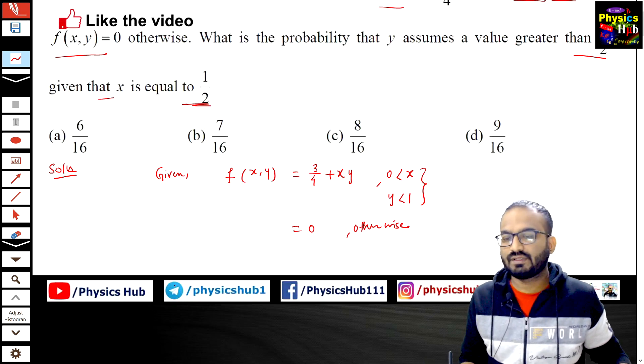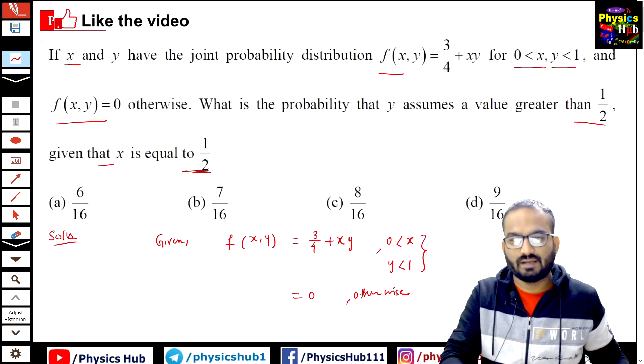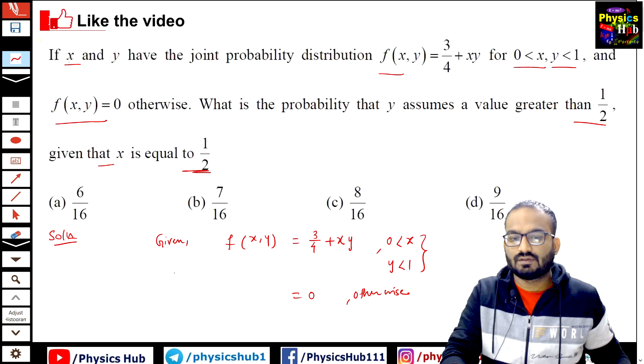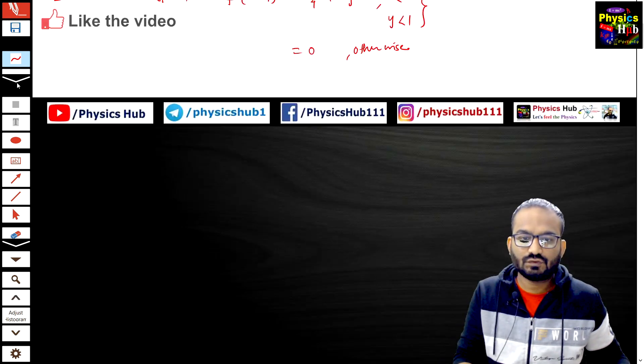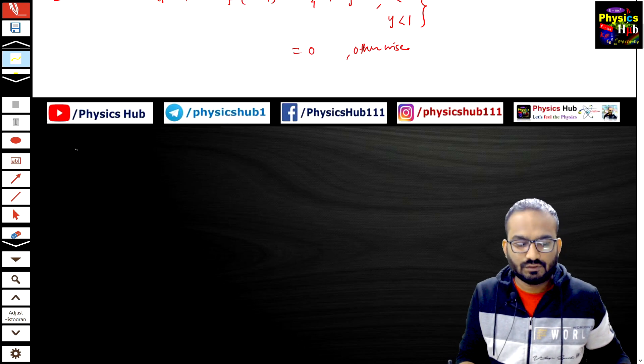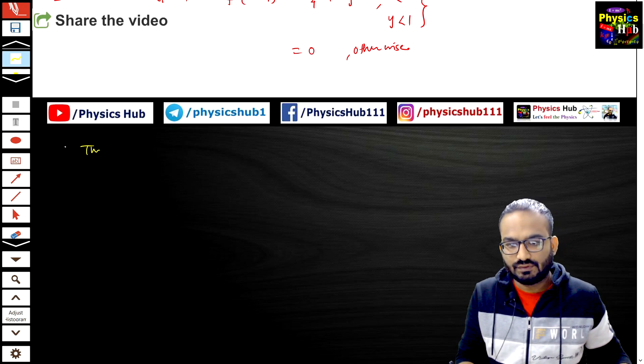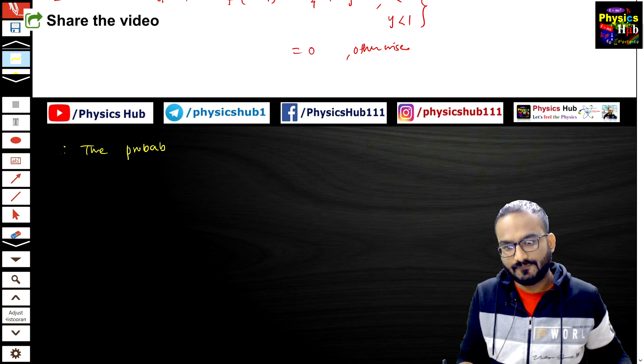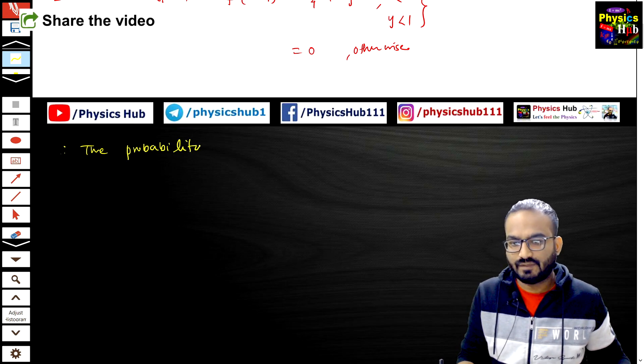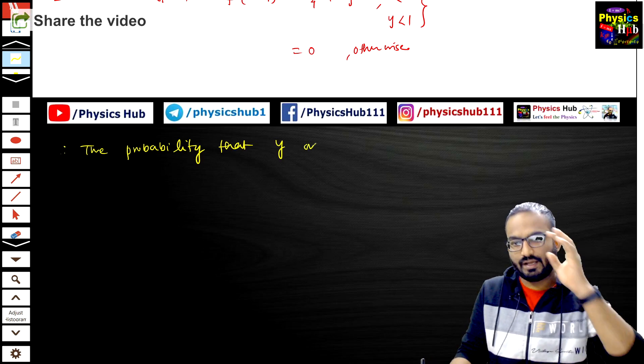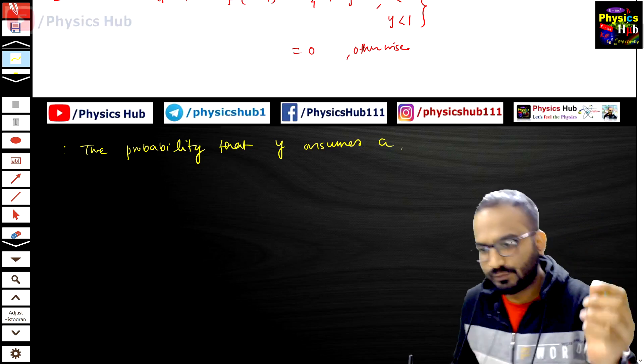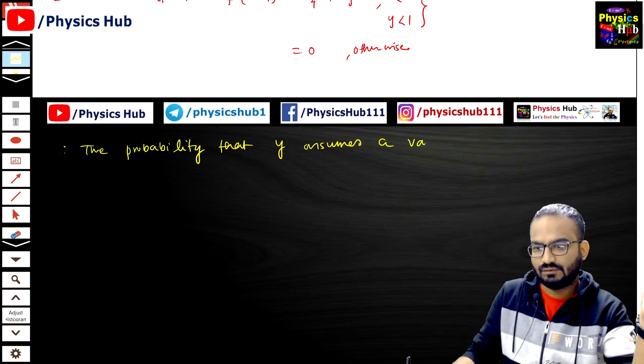So what is the probability that y assumes a value greater than 1/2 given that x equals 1/2? To do that, we need to find the probability that y assumes